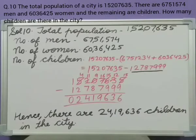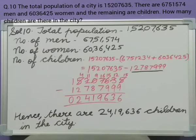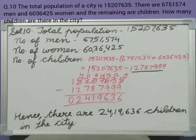Question number 10. The total population of a city is 1,52,07,635. There are 67,51,574 men and 60,36,425 women, and the remaining are children. How many children are there in the city?